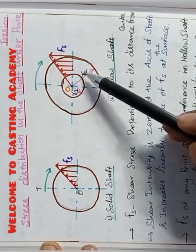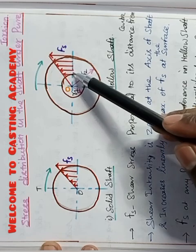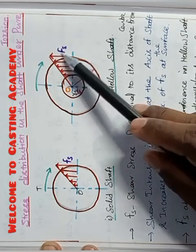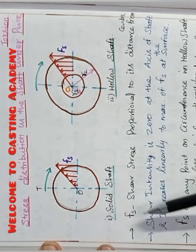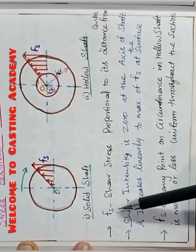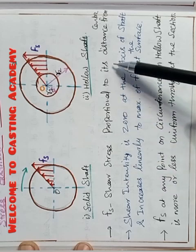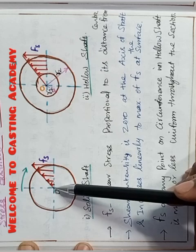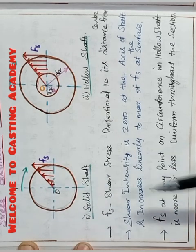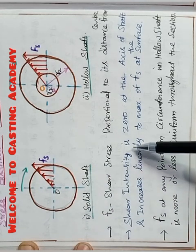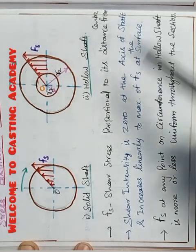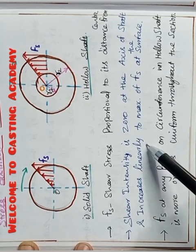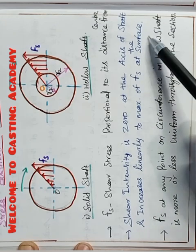But in the case of hollow shaft it is gradually increasing from inner to outer surface only. The maximum is at outer surface. Here Fs is the shear stress proportional to its distance from center. Where shear intensity is zero at the axis of the shaft and increases linearly to maximum of Fs at the surface.